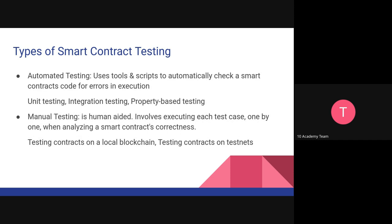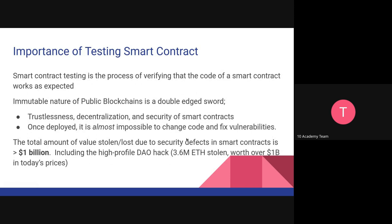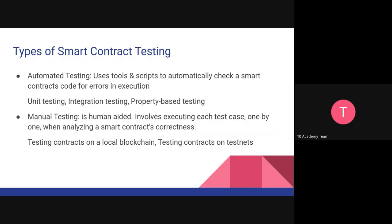Moving on to the types of smart contract testing: there are basically two major methods or approaches. There is automated testing, which includes unit testing and integration testing — these use tools or scripts to check the smart contract code. There is also manual testing, which is human-aided and includes things like testing the contract on a local blockchain or on a testnet.